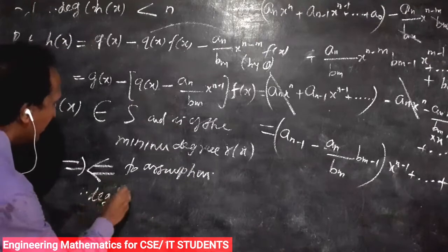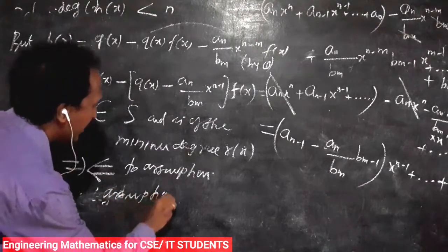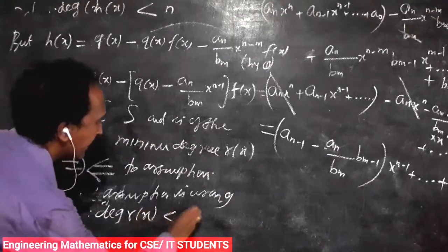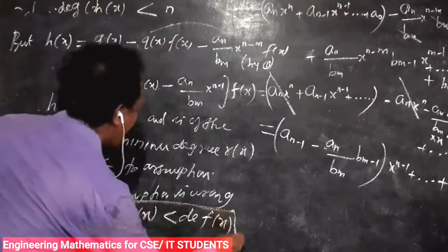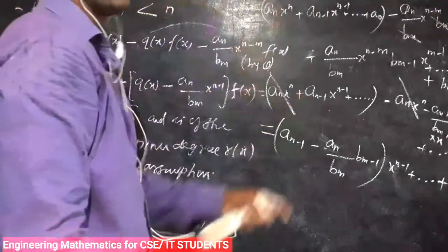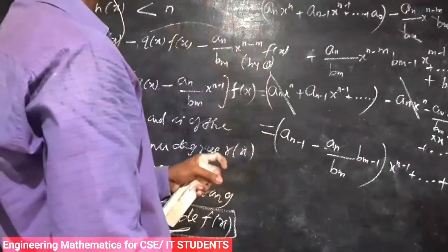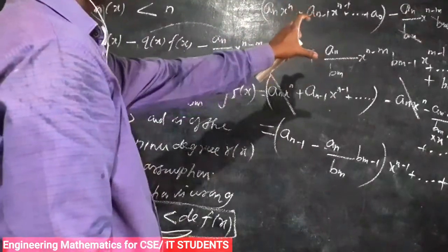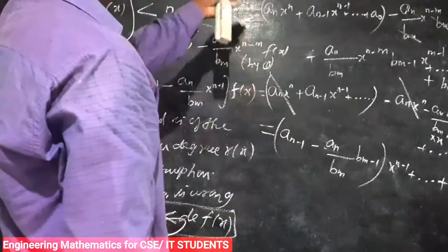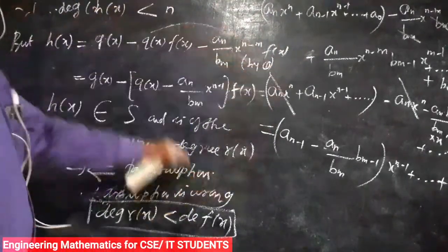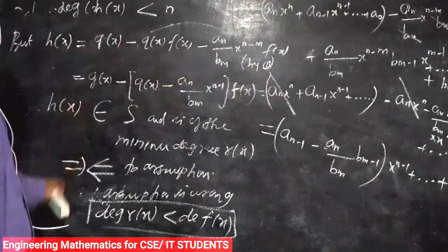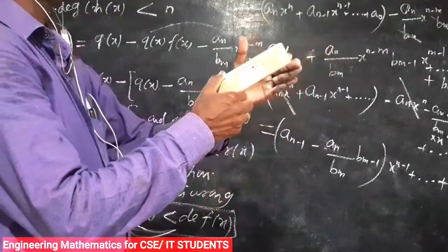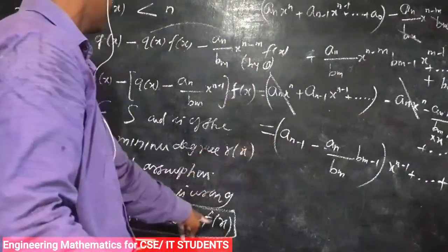Therefore the assumption is wrong. The degree of r(x) must be less than the degree of f(x). So in both cases — Case 1 where 0 belongs to S, and Case 2 where 0 is not in S — we have shown that g(x) equals q(x) times f(x) plus r(x) where either r(x) equals 0 or degree of r(x) is less than degree of f(x).